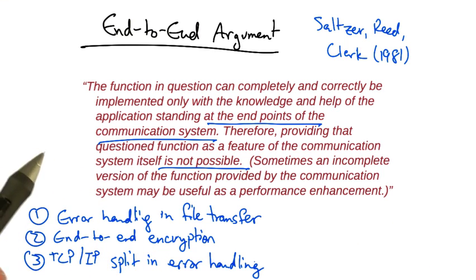Commonly used examples of the end-to-end argument include error handling and file transfer, encrypting end-to-end versus hop by hop in the network, and the partition of TCP and IP of error handling, flow control, and congestion control.